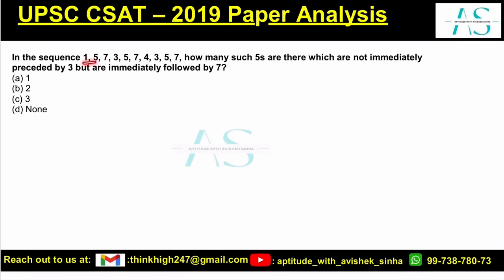In the sequence 1, 5, 7, 3, 5, 7, 4, 3, 5, 7 — how many fives are there which are not immediately preceded by 3 but are immediately followed by 7?